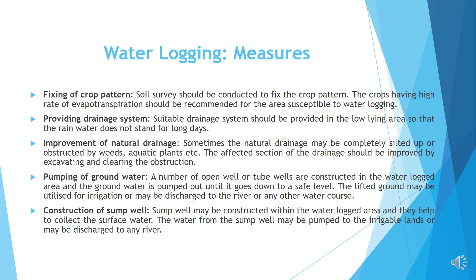Further measures against waterlogging. Fixing of crop patterns: Soil survey should be conducted to fix the crop pattern. Crops having a high rate of evapotranspiration should be recommended for areas susceptible to waterlogging. Providing drainage system: A suitable drainage system should be provided in low-lying areas so that rainwater does not stand for long days. Improvement of natural drainage: Sometimes the natural drainage may be completely silted up or obstructed by weeds, aquatic plants, etc. The affected section of the drainage should be improved by excavating and clearing the obstruction.